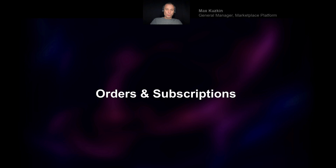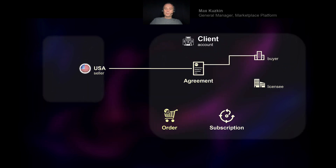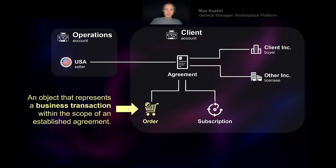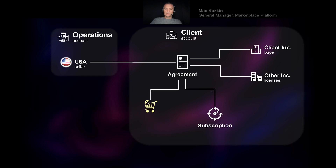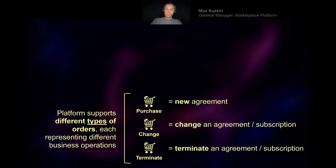This brings us to orders and subscriptions. An order in our platform is a very important object representing a business transaction, which always happens in the scope of a given agreement. We support different order types: purchase orders, change orders, and termination orders. Purchase orders are used to establish a new agreement, change orders modify agreements or subscriptions, and termination orders — well, you guessed it — they terminate things.